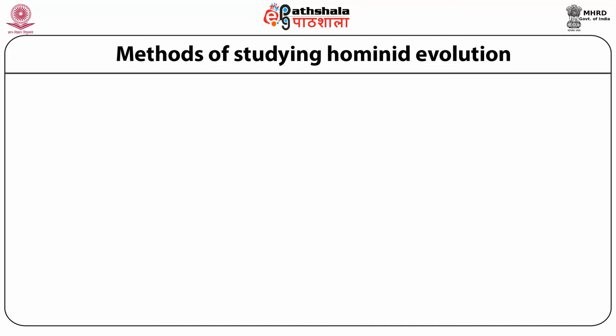Regarding methods of studying hominid evolution: paleoanthropology is a multidisciplinary science. It uses broad-based techniques to analyze every clue left by early hominids. Several methods have been used by paleoanthropologists to establish links between fossil evidence recovered from various sites, including comparative morphology, fossil evidence, dating methods, and molecular techniques.